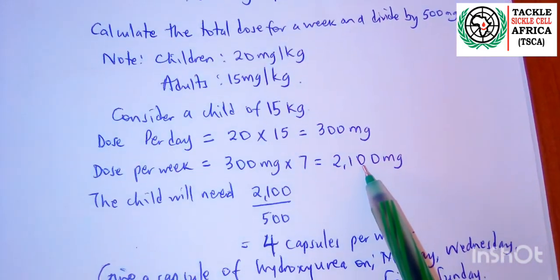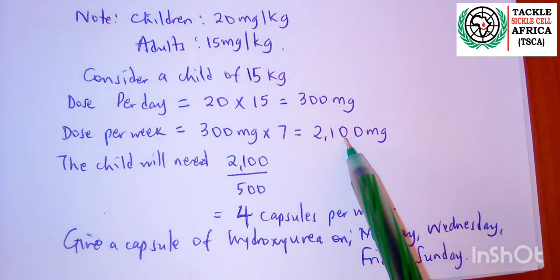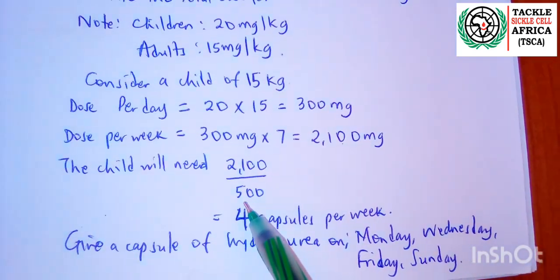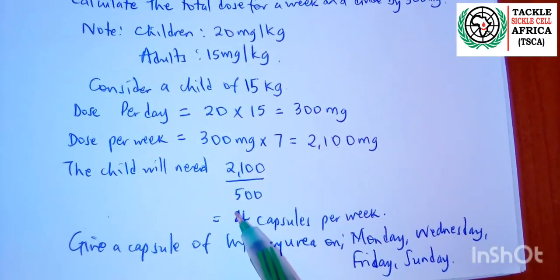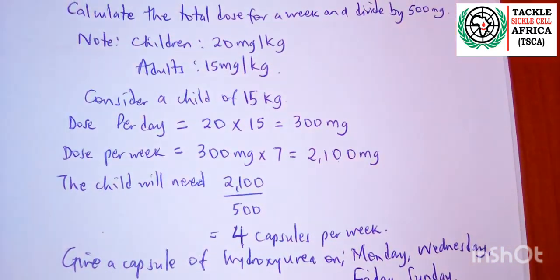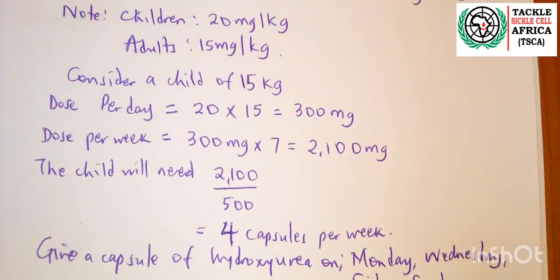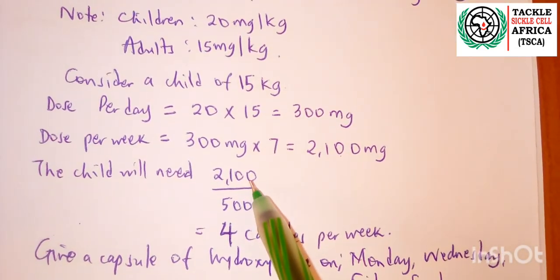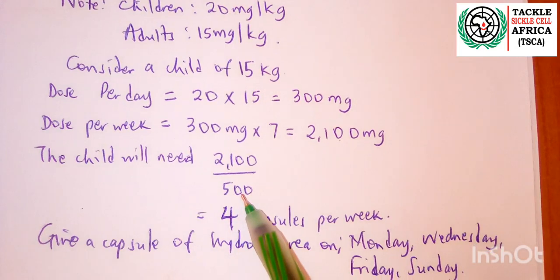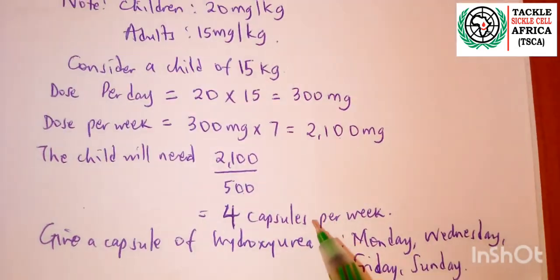That gives us 2100 milligrams for the week. Dividing by the 50 milligram capsules we have available, we divide 2100 by 500 milligrams and get approximately 4 capsules per week. So this child needs to take 4 capsules spread across the 7 days of the week.